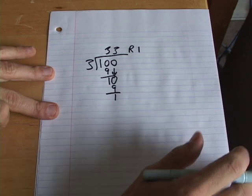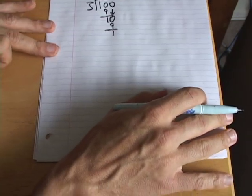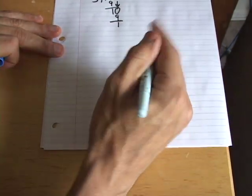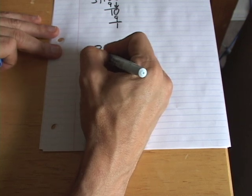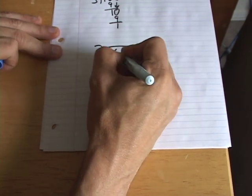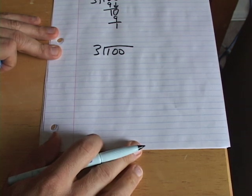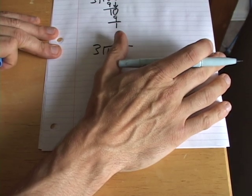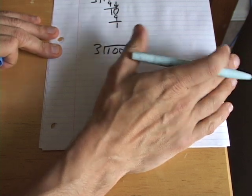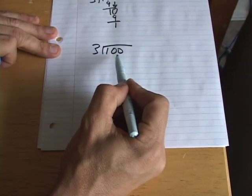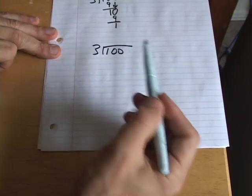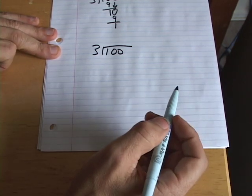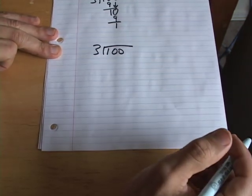So we're going to look at something a little bit more unconventional. We're going to do the same problem in a different way. So 3 goes into 100 how many times, basically. And rather than go through this guessing game, we're just going to take a guess. We know from doing the problem already that the answer is 33 remainder 1. But let's say we didn't know what the answer was and we weren't quite as up to speed on our multiplication tables.